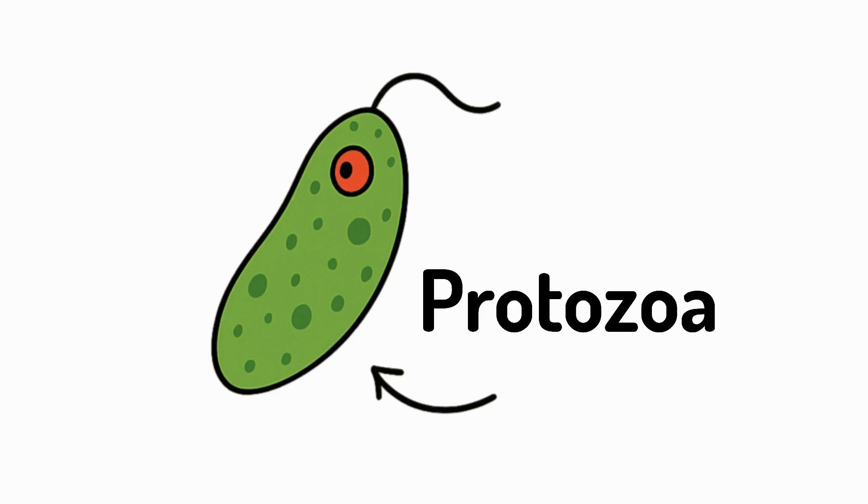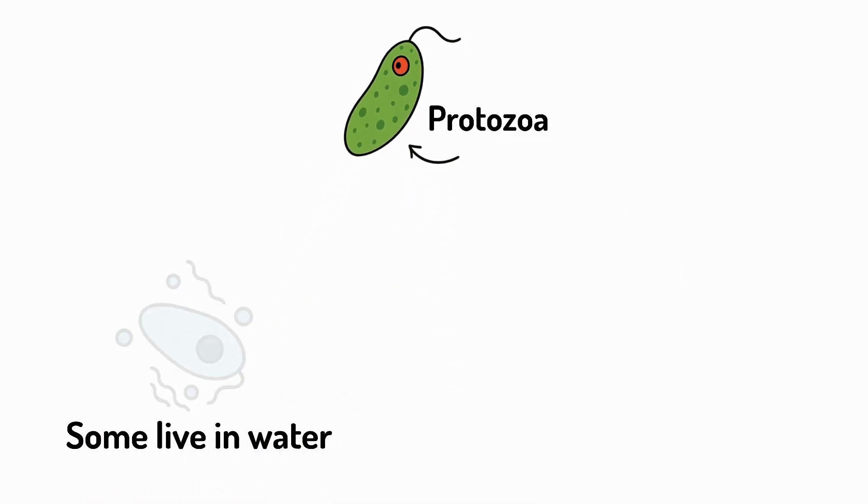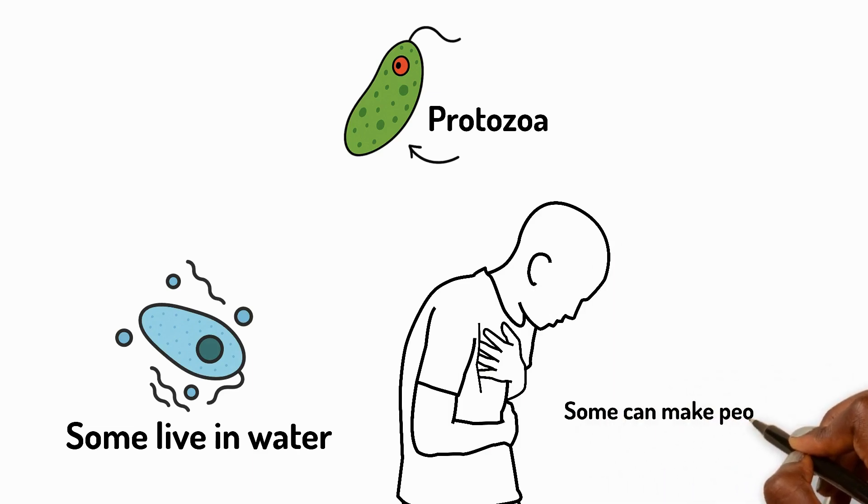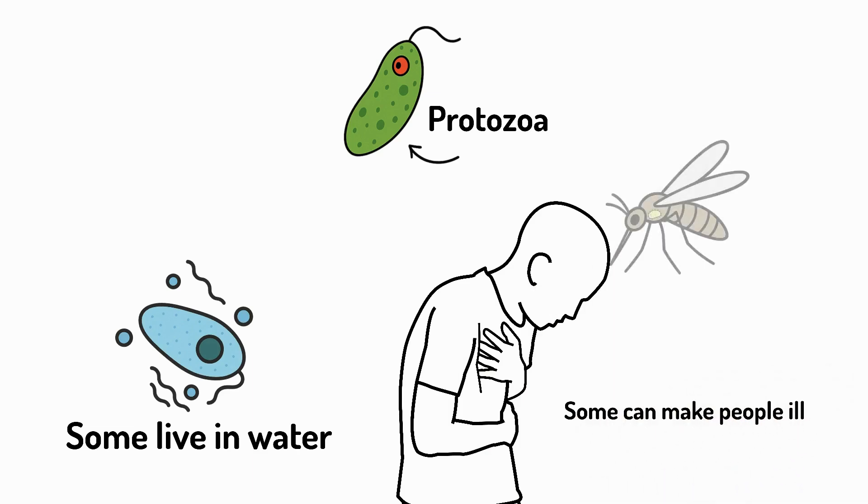Protozoa are animal-like microorganisms. Some live in water and some can make people ill, like the one that causes malaria.